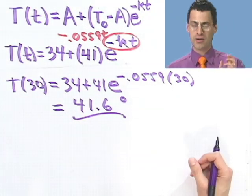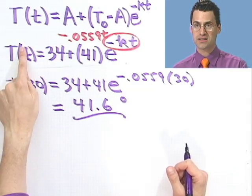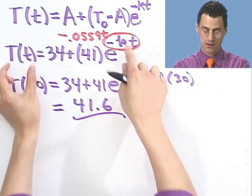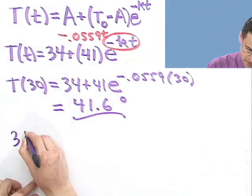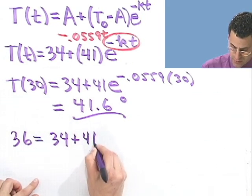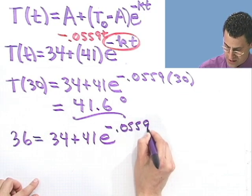Now I can ask another question, though. Suppose I want to drink it. At the very moment, it's 36 degrees. I want a real icy cold one. What would I do? Well, now I want to find the time when the temperature is 36. So I set this equal to 36, and I solve for T.